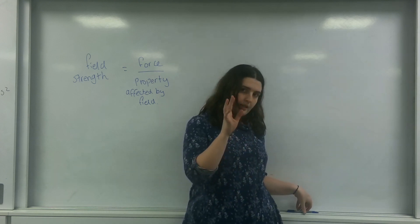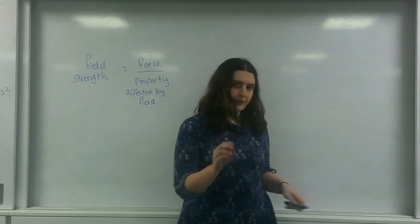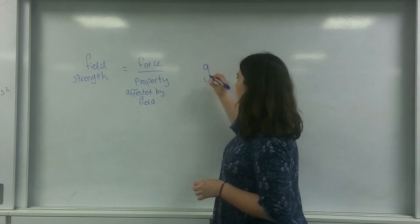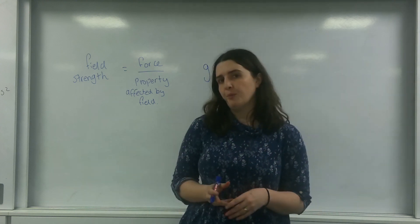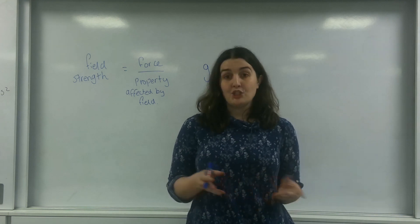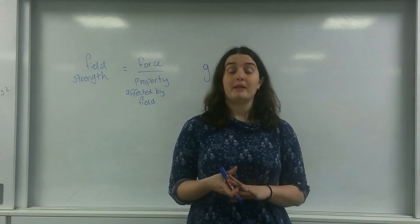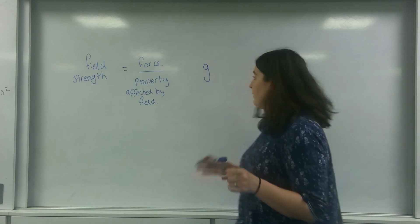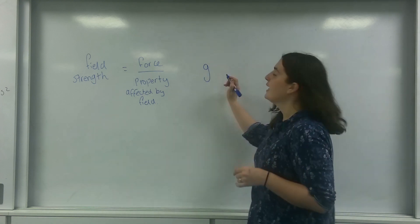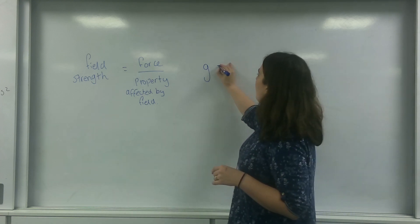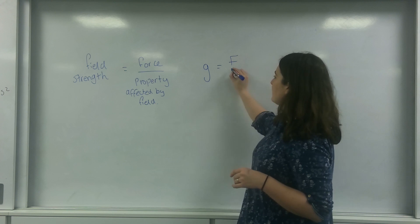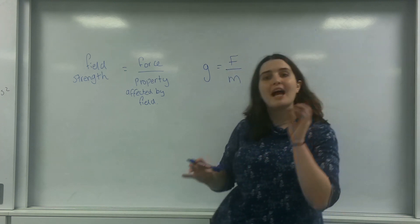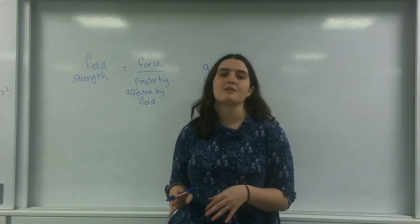So in gravitational fields, field strength is represented by the letter little g, and you've seen this before — we say that g on Earth is 9.81 metres per second per second. Now g here would be F, the force that the object felt, divided by the mass of that object that's in the field.